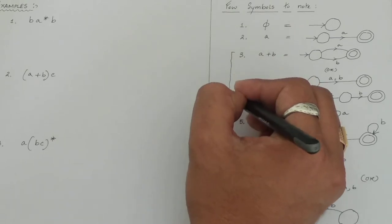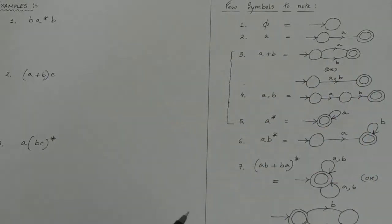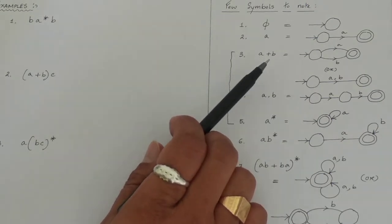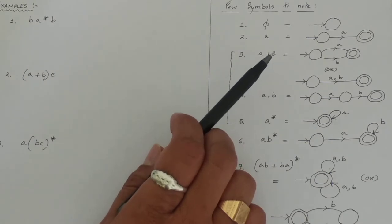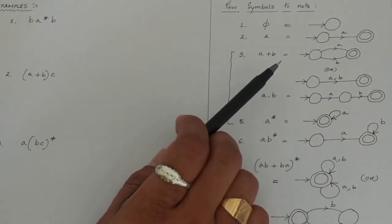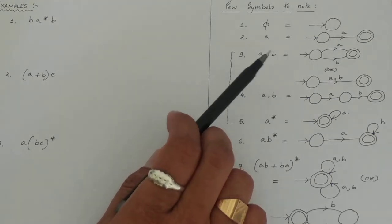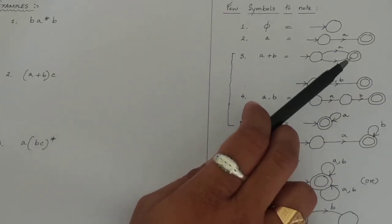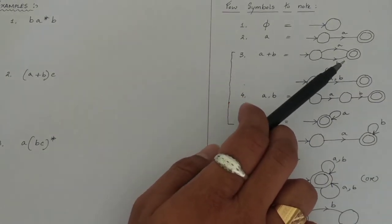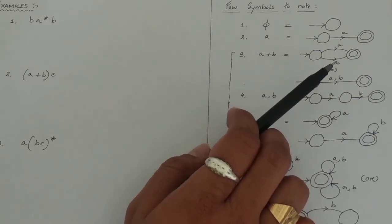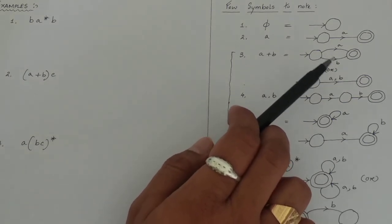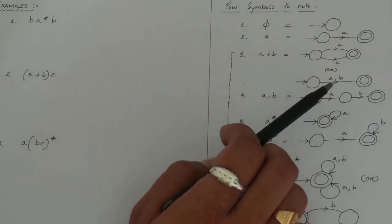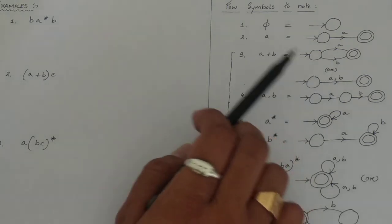Now keep in mind these three important symbols. First: a plus b. If represented by union, it means either a or b. From a single initial state to the final state, there will be a transition for 'a' and a transition for 'b', both going in the same direction. Since both transitions go the same way, we can write this as 'a,b' — meaning both are on the same transition, representing a plus b.